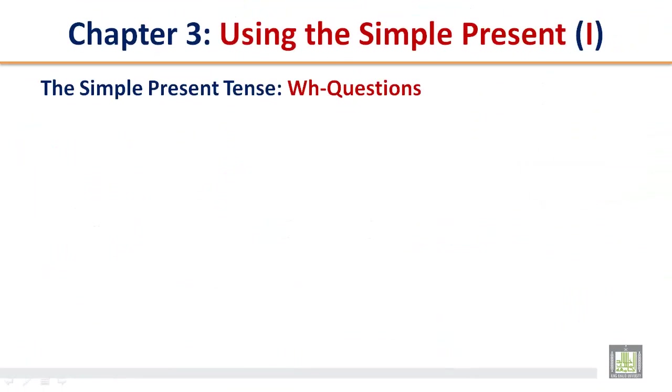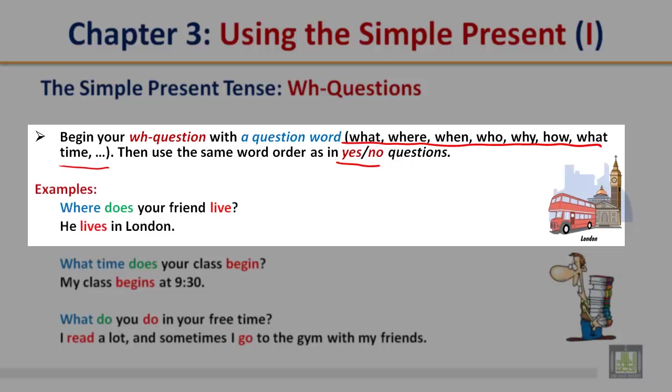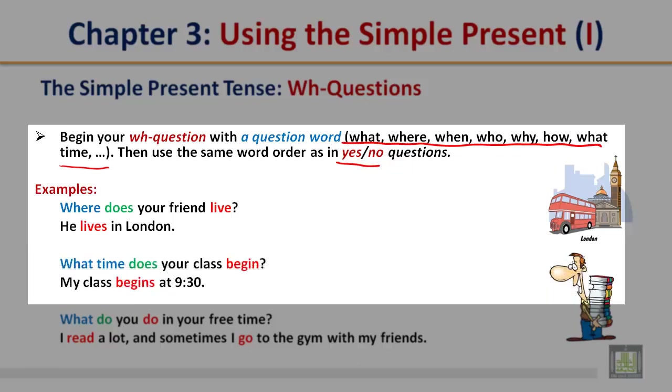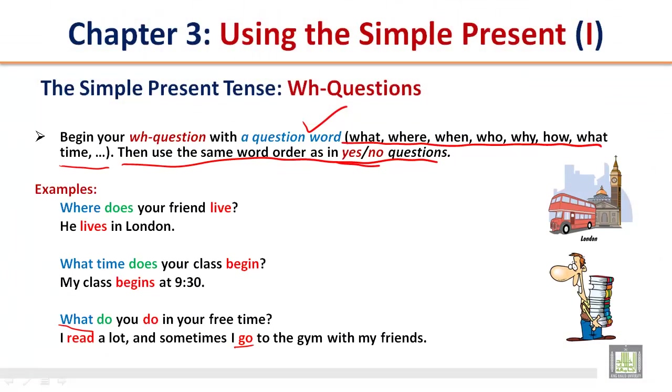The simple present tense: wh-questions. Begin your wh-question with a question word. What are the question words? What, where, when, who, why, how, what time. Then use the same word order as in yes or no questions. Examples: Where does your friend live? He lives in London. What time does your class begin? My class begins at 9:30. What do you do in your free time? I read a lot and sometimes go to the gym with my friends. It is very important to note that you use the same word order as in yes or no questions when you begin your question with a question word. Please review the previous slides for reminders.